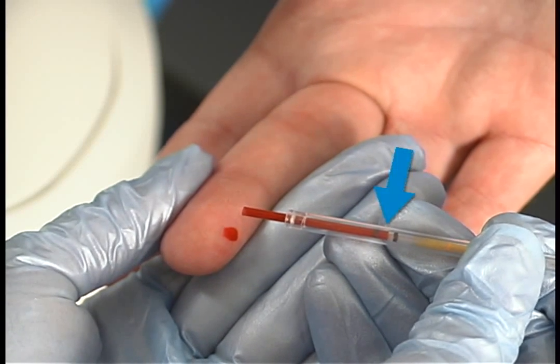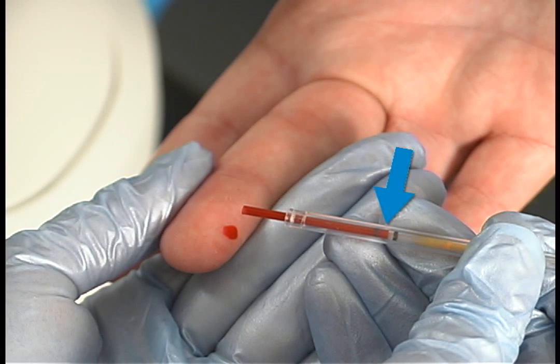Fill the tube between the two black fill lines. It is very important to fill between these two lines, as overfilling or underfilling will result in a tube fill error. If this occurs, it is necessary to discard the tube and begin again.